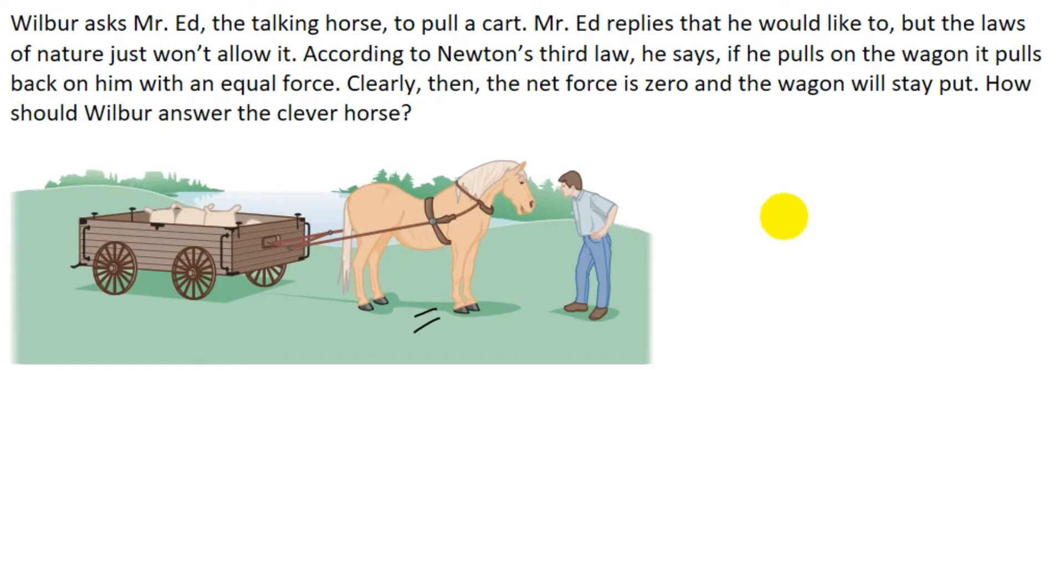Why? Because the horse is adding two action-reaction forces that act on different objects. Let me explain with this diagram: this is the cart, and here is the horse. When the horse applies force F on the cart, the cart also applies a force F in the opposite direction with the same magnitude. But these action-reaction forces are applied on two different objects—you can't add these two forces.